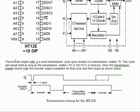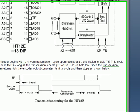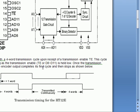The encoder begins with a 4-word transmission cycle upon receipt of transmission enable low. This cycle will repeat itself as long as the transmission enable or D8 or D11 is held low. Once the transmission enable returns high the encoder output completes its final cycle and then stops as shown in the timing diagram below.